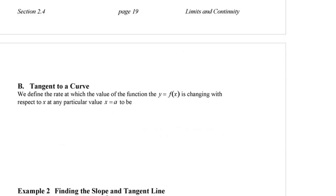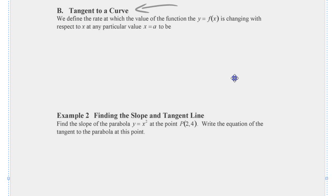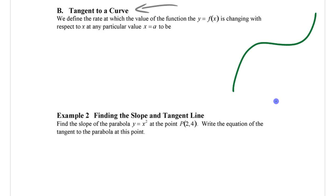Now we're going to move into talking about instantaneous rate of change. The instantaneous rate of change is the slope of a tangent to a curve. If you're in grade 10 and someone asks you the slope of a straight line you can figure it out, but for a curve you might say you don't know — you could do average rate of change, average slope. But you can talk about the slope at a single point: here it looks like almost zero, here it's pretty steep, here it's going downhill slightly. The slope at a single point is the slope of the tangent line.